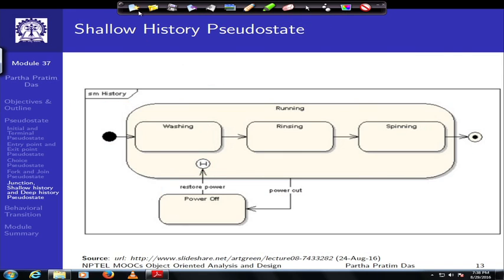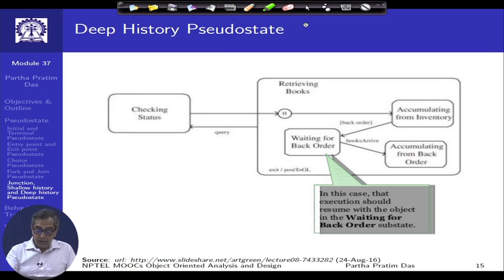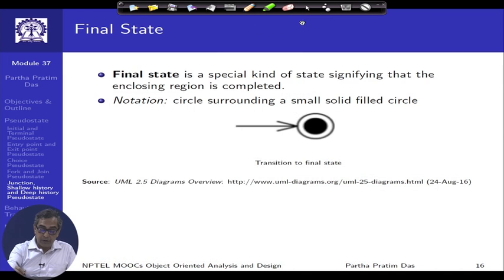In contrast, you could have a deep history pseudo state, which not only depends on the last substate but on the last sequence of substates that you have transited through. Examples of both shallow and deep history pseudo states are provided in the presentation — please go through them and try to understand them more.